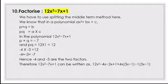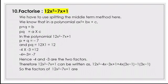From the second group -3x + 1, take out -1 to get -1(3x - 1). Both brackets contain (3x - 1), so we factor that out: (3x - 1)(4x - 1). Therefore the factors of 12x² - 7x + 1 are (3x - 1) and (4x - 1).